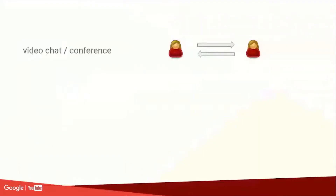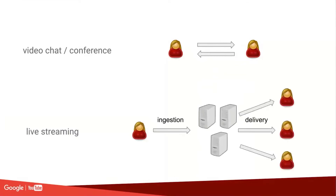The common WebRTC use case is video chat conferencing — bi-directional — where we optimize for smoothness. The most important thing is that you don't get any buffering, and you'll sacrifice quality, resolution, and frame rate in the name of that. For live streaming, it's a little different: the ingestion side is unidirectional, you only have one channel for audio and video, you have to handle adaptive formats, and you really want to optimize for quality.